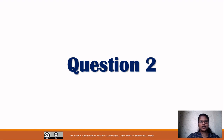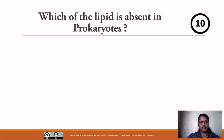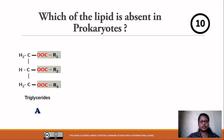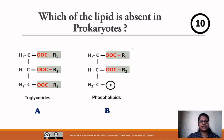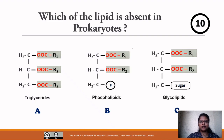Question number two: Which of the lipids is absent in prokaryotes? Your options — option A: triglycerides, option B: phospholipids, option C: glycolipids. Your time starts now.